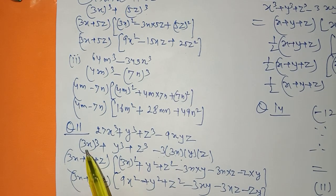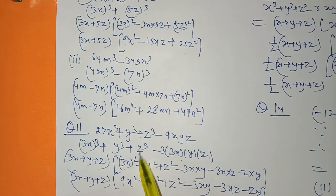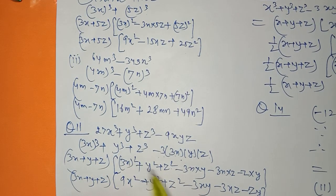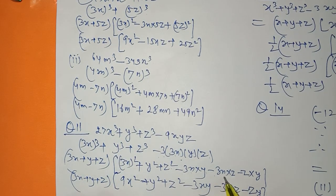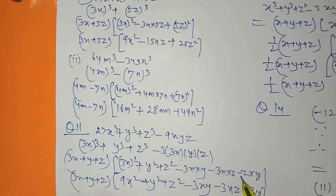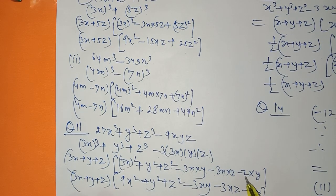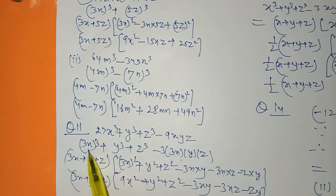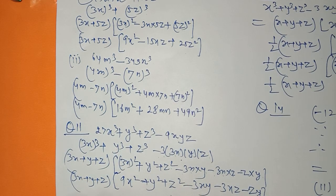Substituting: x plus y plus z in bracket, then x², y², z² for each, giving 9x², y², z², then minus xy, minus yz, minus zx terms. After simplification we get 9x² plus y² plus z² minus 3xy minus 3xz minus zy.